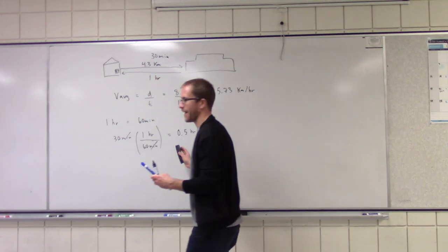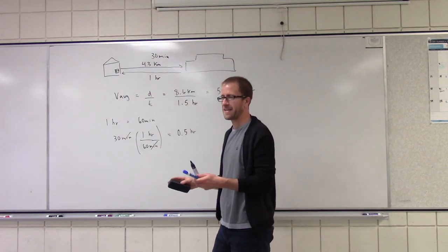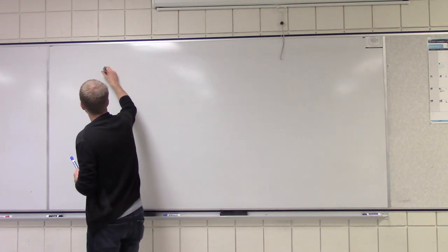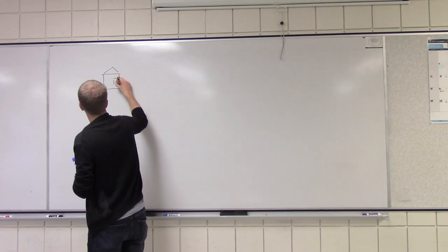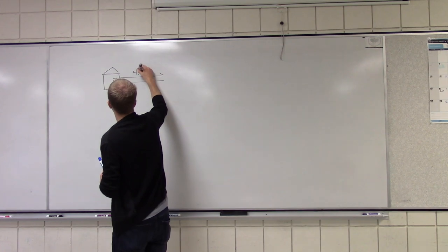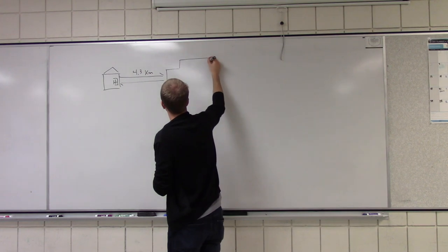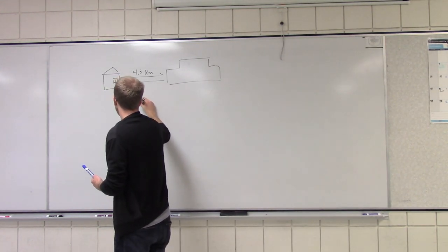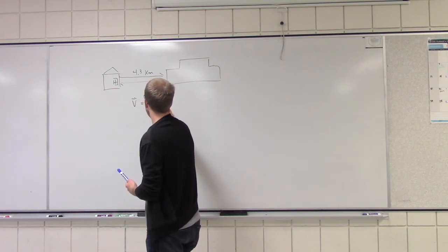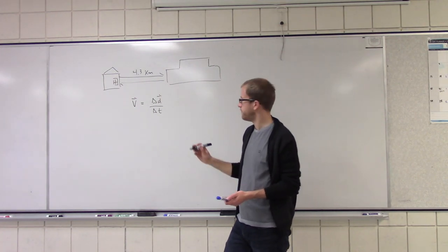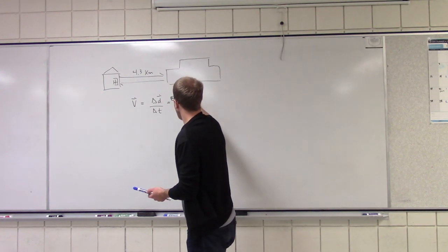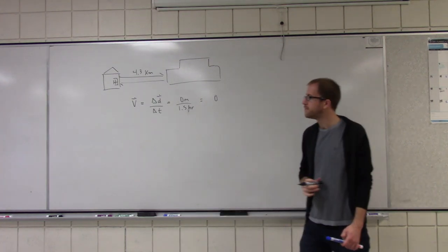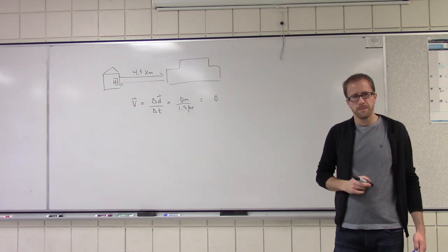Walking real fast — especially this 4.3 kilometers in 30 minutes, that's a jog. I forgot to do something on that last problem. We calculated the average speed, but what did we not calculate? Velocity. What is our velocity going to be? Zero. Why is our velocity zero? We are going back to the same place we started. So what is our total change in position? Zero. It doesn't matter that we were traveling for an hour and a half — our displacement was zero. Therefore, our velocity is zero.